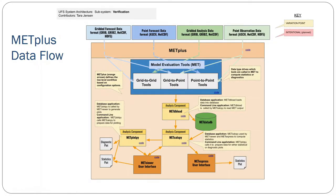Here is a schematic of the architecture for METPLUS in the Unified Forecast System architecture format. You can see across the top we have specifications for the type of data being passed in, whether it's gridded or point observations, gridded or point forecasts. Depending on how you match those up, you'll either be able to use grid-to-grid tools in MET, grid-to-point tools, or point-to-point tools.